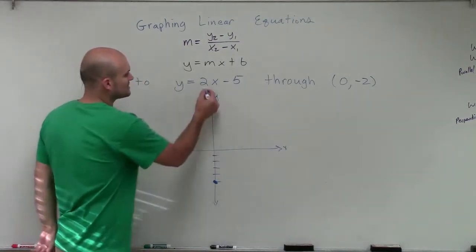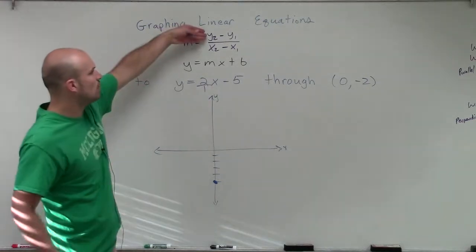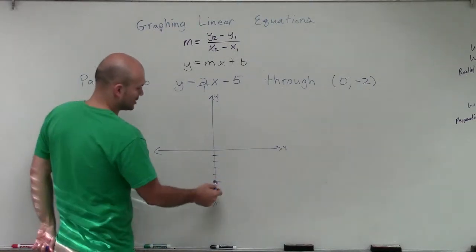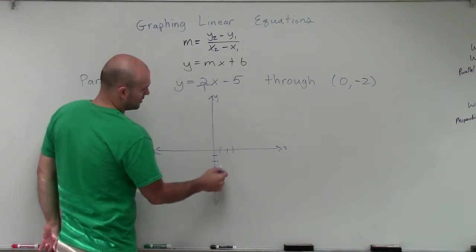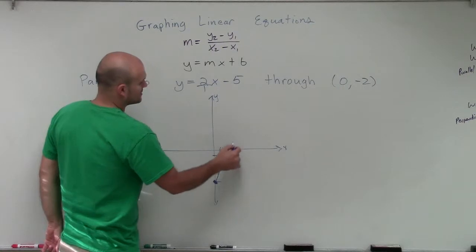And then my slope is going to be 2 over 1, meaning the change in y over the change of x. So I'm going to go up 2 over 1, up 2 over 1.